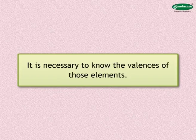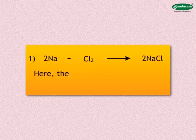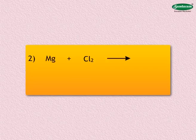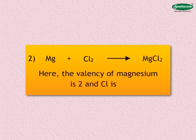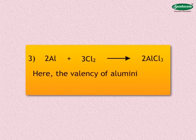Let us study the following examples of valency in compound formation. One: sodium combines with chlorine to form sodium chloride — the valency of both sodium and chlorine is one. Two: magnesium combines with chlorine to form magnesium chloride — the valency of magnesium is two and chlorine is one. Three: aluminium combines with chlorine to form aluminium chloride — the valency of aluminium is three and that of chlorine is one.